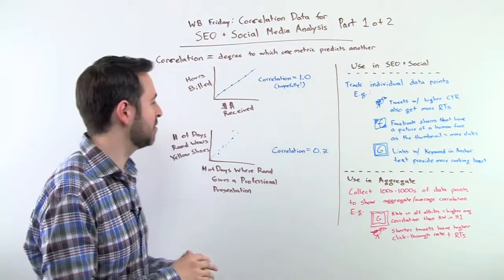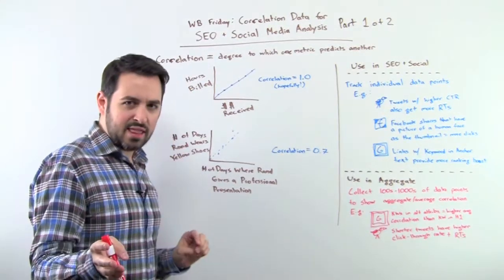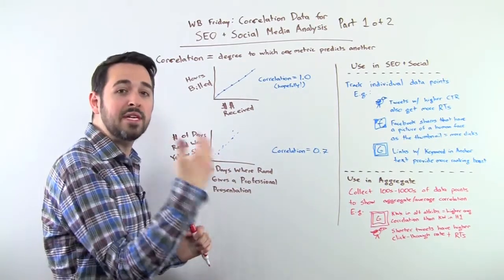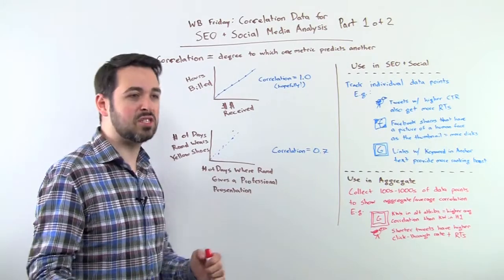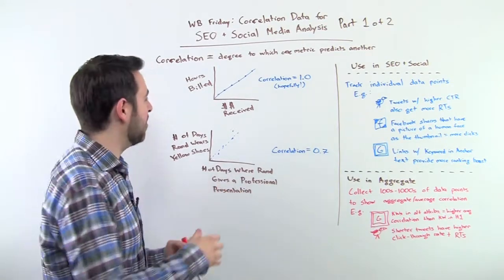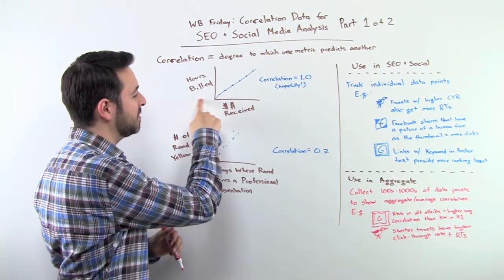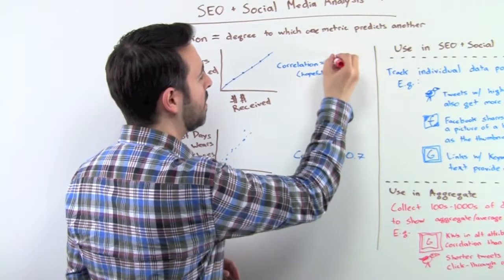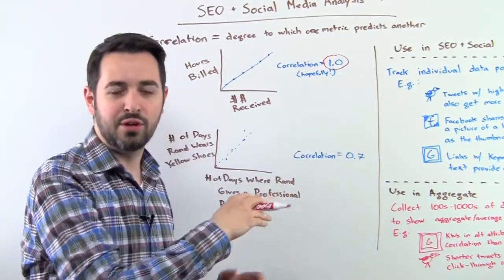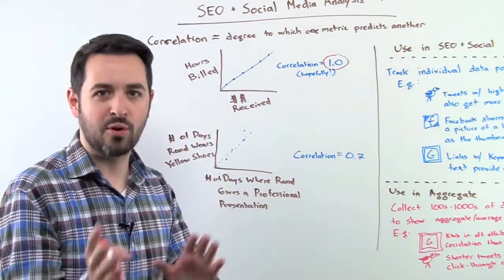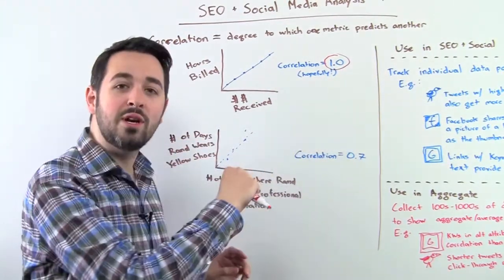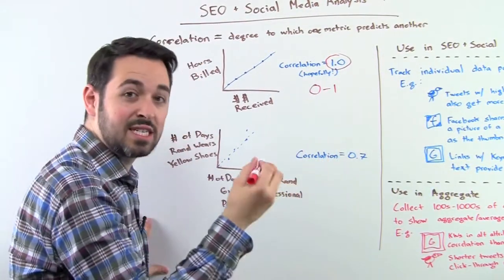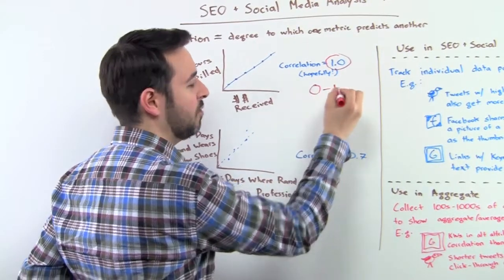It's essentially the degree to which one metric predicts or has a correlation, a connection to another. So let me give you a couple of really simple examples just so you can understand this and then we'll talk about some ways to use it in SEO and social. So let's imagine for a second that you are a contractor and you're doing some content writing and you bill the companies that you write for on an hourly basis. So you do 10 hours of labor at $10 an hour, let's say, and you get $100. So the hours billed and the dollars received have a very good correlation. In fact, they'd have a correlation of 1.0, hopefully. Hopefully you don't bill some hours and then people don't pay or they pay you more hours than you billed. Maybe those things will happen, but usually it's a one-to-one correlation. It's 1.0 as the correlation because remember, all correlation numbers, at least statistically speaking from a math perspective, are between 0 and 1, positive correlations at least.